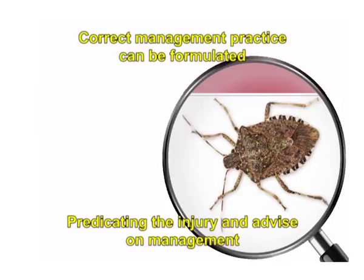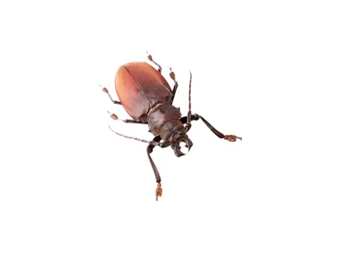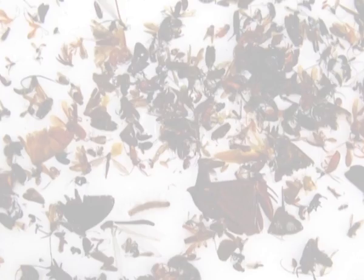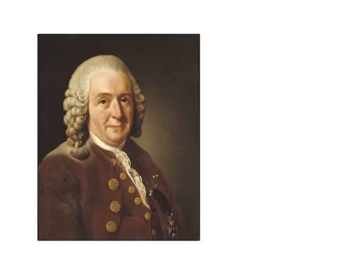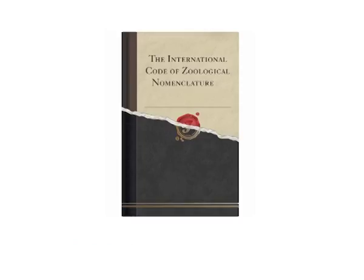Regarding nomenclature: major categories such as phylum, class, order, family, and genus consist of only one word, whereas a species is composed of two names — a genus name and a specific name. Hence, the scientific name of a species is binomial. The nomenclature system, which means the naming of a species, is called binomial nomenclature, which was advanced by Swedish naturalist Carolus Linnaeus in 1758.